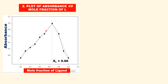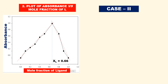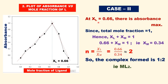In Case 2, the plot of absorbance versus mole fraction of ligand shows an absorption maximum at Xl = 0.66. Since the total mole fraction equals 1, we can calculate Xm (mole fraction of metal ion). Substituting, n equals 2. Therefore the complex formed is 1:2, that is ML2.